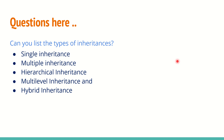Can you list the types of inheritance? Single inheritance, multiple inheritance, hierarchical inheritance, multi-level inheritance, and hybrid inheritance. Single inheritance is one parent, one child. Multiple inheritance means two parents but with a single child — like mom and dad together but with a single child.